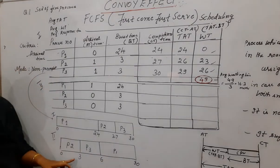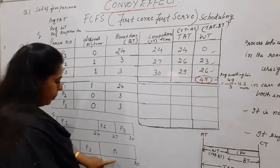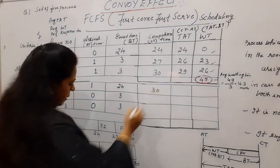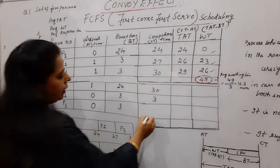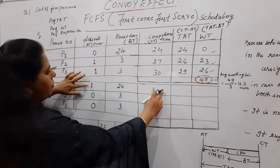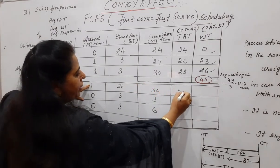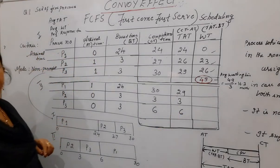Now fill the values. Completion time. P1 is completing at 30. P2 is completing at 3. P3 is completing at 6. Turnaround time. Completion time minus arrival time. 30 minus 1 is 29. 3 minus 0 is 3. 6 minus 0 is 6. You got the turnaround.